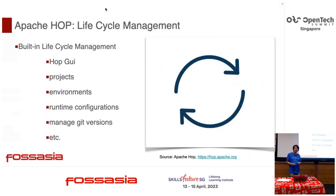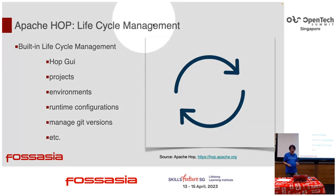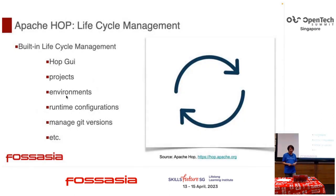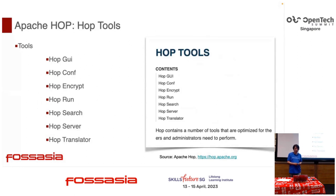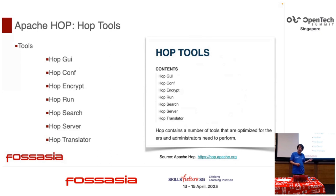Apache Hop has a lifecycle management system: Hop GUI, projects, environments, and runtime configuration. And you can manage Git versions. Hop tools include: GUI, conf, encrypt, run, search, server, and translator.